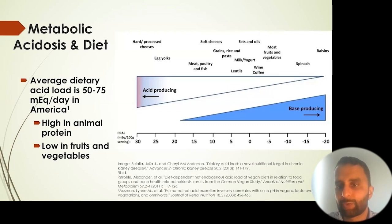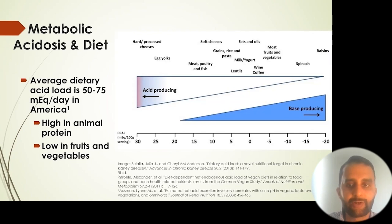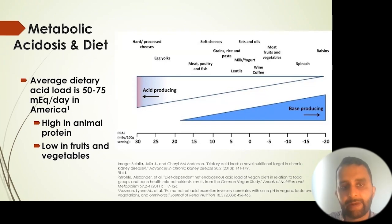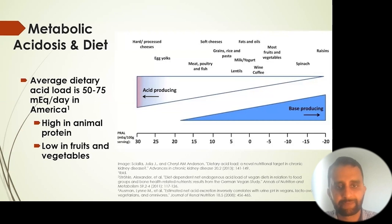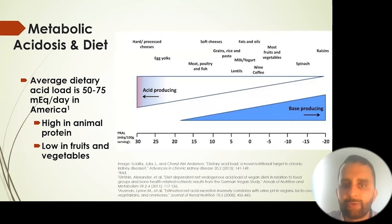The kidneys work to excrete that acid, and if the kidneys are not healthy and have some level of dysfunction, this acid load starts to accumulate and can cause problems. The net acid load of the average American is a product of a diet high in animal protein and low in fruits and vegetables. As diets include more animal-based foods, they tend to be more acid-producing, as you can see on the graph.